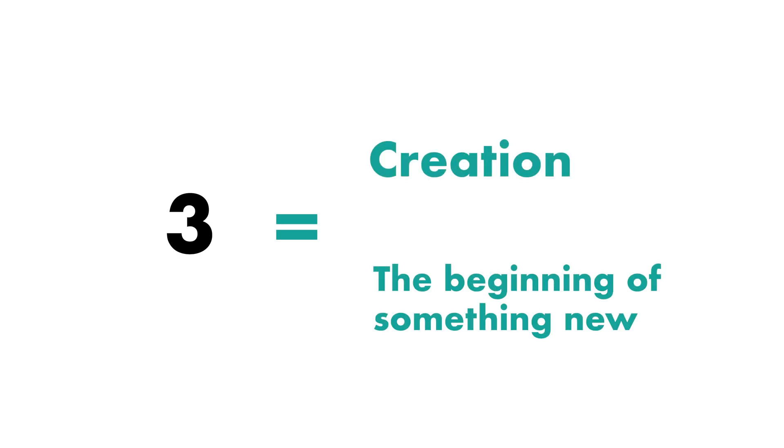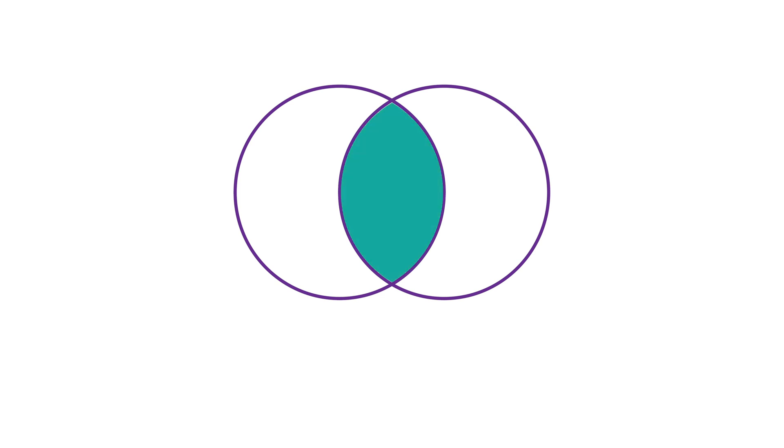So number three represents creation, the start, the beginning of something new. Source is not satisfied with this, it's not satisfied with the creation of the vesica piscis. It wants to expand even further and it decides to create a third circle to expand itself even more, or to experiment or to experience more aspects of existence or more aspects of life.